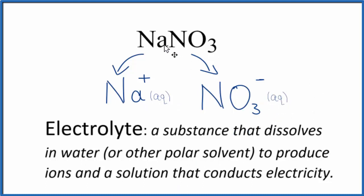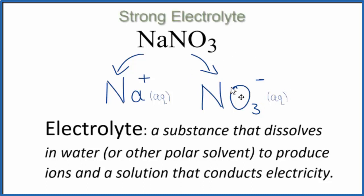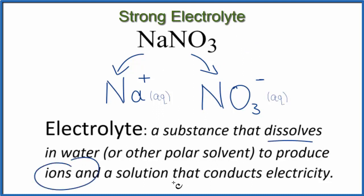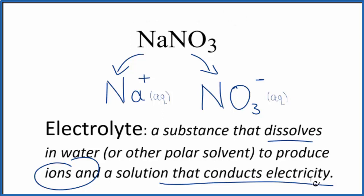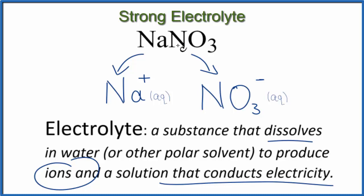In answer to our question, sodium nitrate is an electrolyte — and it's a strong electrolyte, because it is soluble and breaks apart into its ions. That means it dissolves in water, we have these ions, and it conducts electricity. This is Dr. B answering the question whether NaNO3, sodium nitrate, is an electrolyte or a non-electrolyte. It's a strong electrolyte. Thanks for watching.